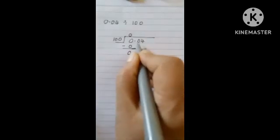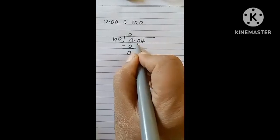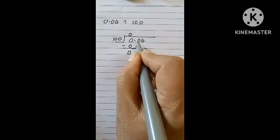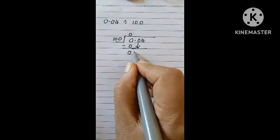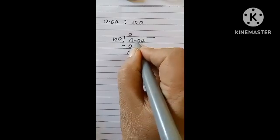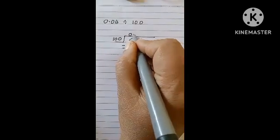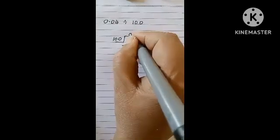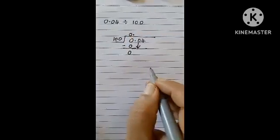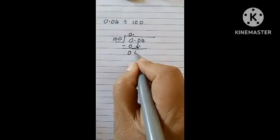Now, you will take another number from the dividend, that is this 0. But before taking this 0 at remainder's place, you need to take this decimal point on quotient place. Now, I get this 0 here down.